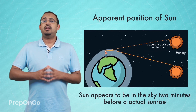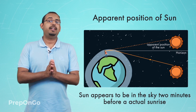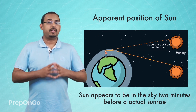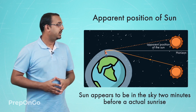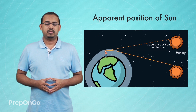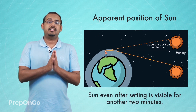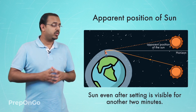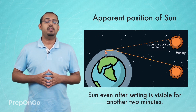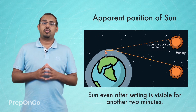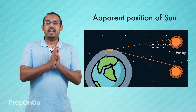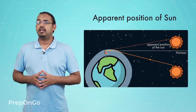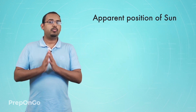One more phenomenon where we can observe the refraction of light through our atmosphere is during the time of sunset or sunrise. During sunrise, the sun appears to be in the sky two minutes before it has actually risen. During sunset, the sun is visible for another two minutes even after it has crossed the horizon. The reason why this happens is again related to the refraction of sunlight through our atmosphere. Let us understand both these cases one by one.